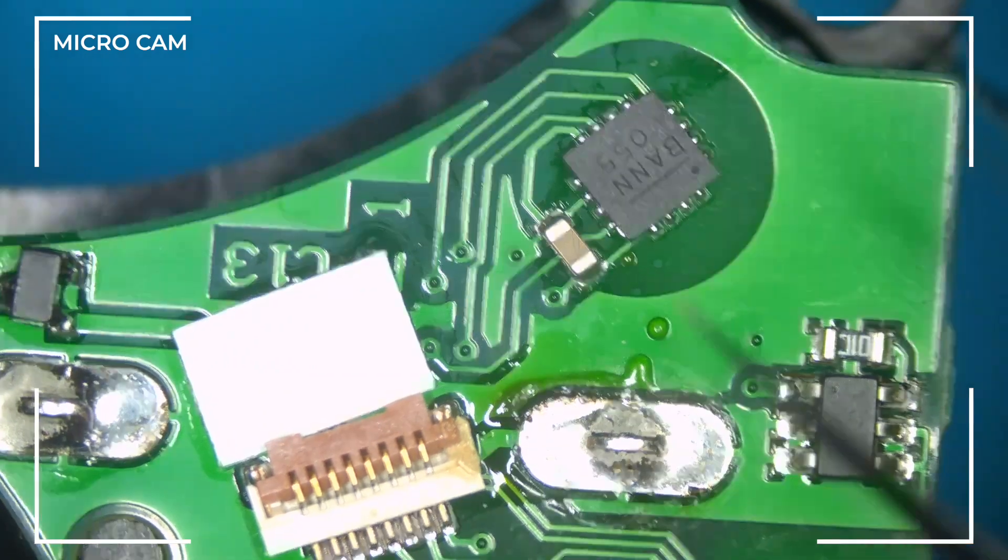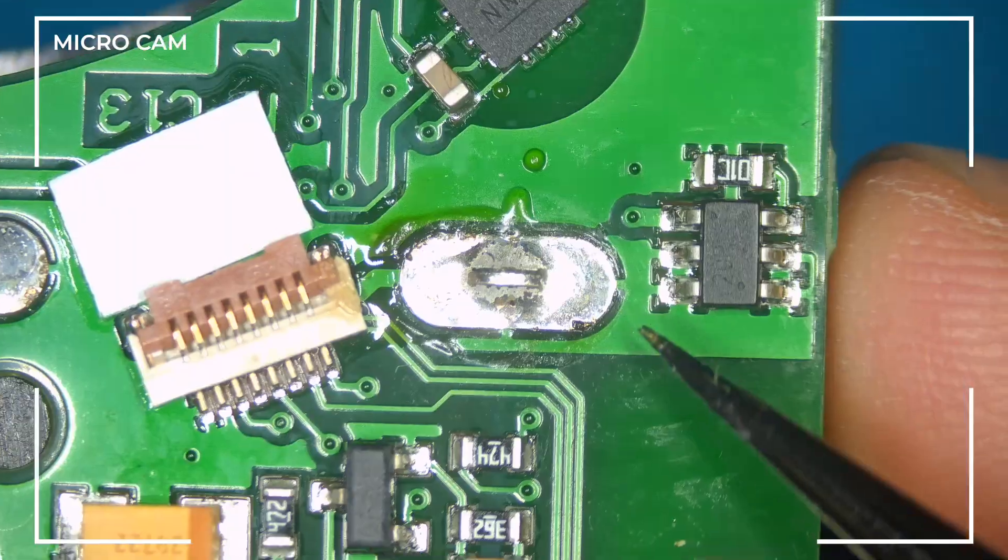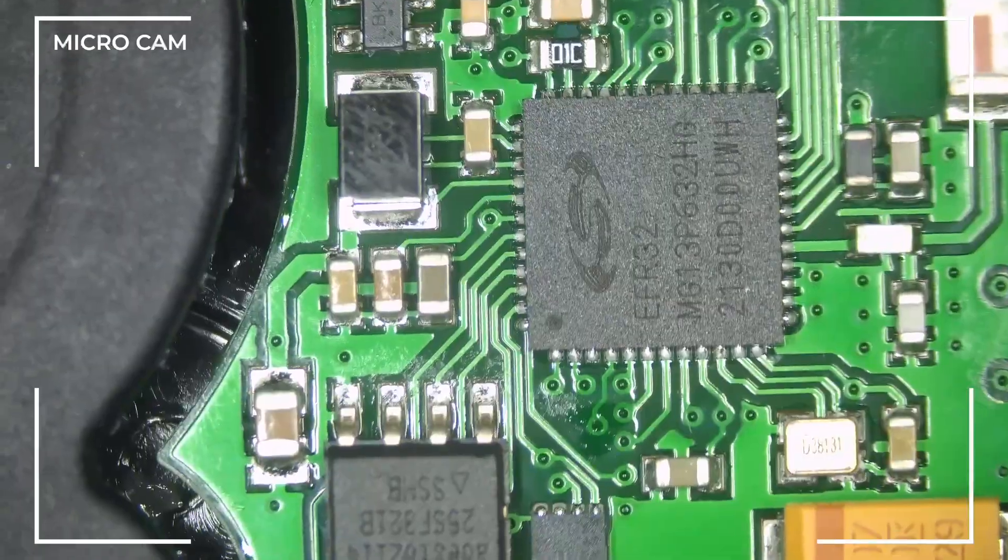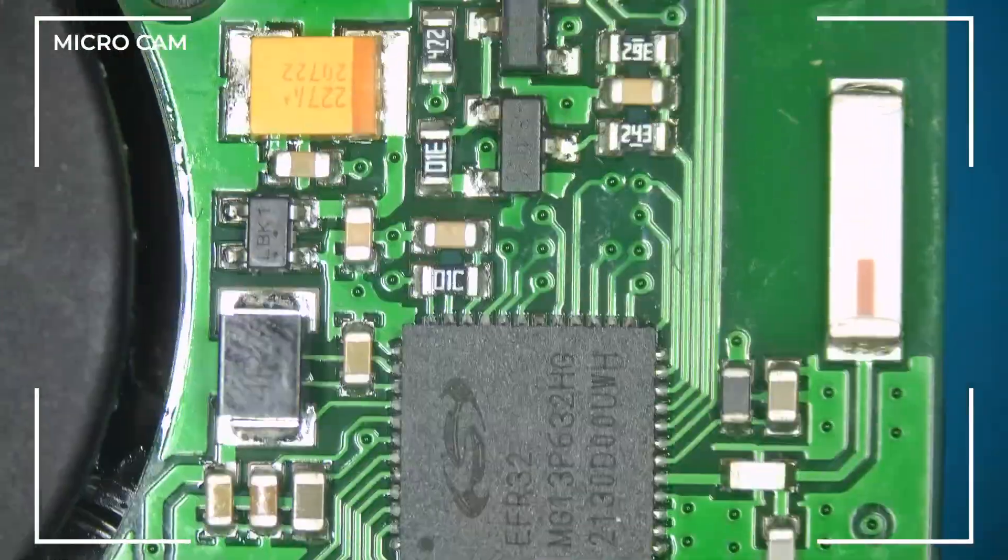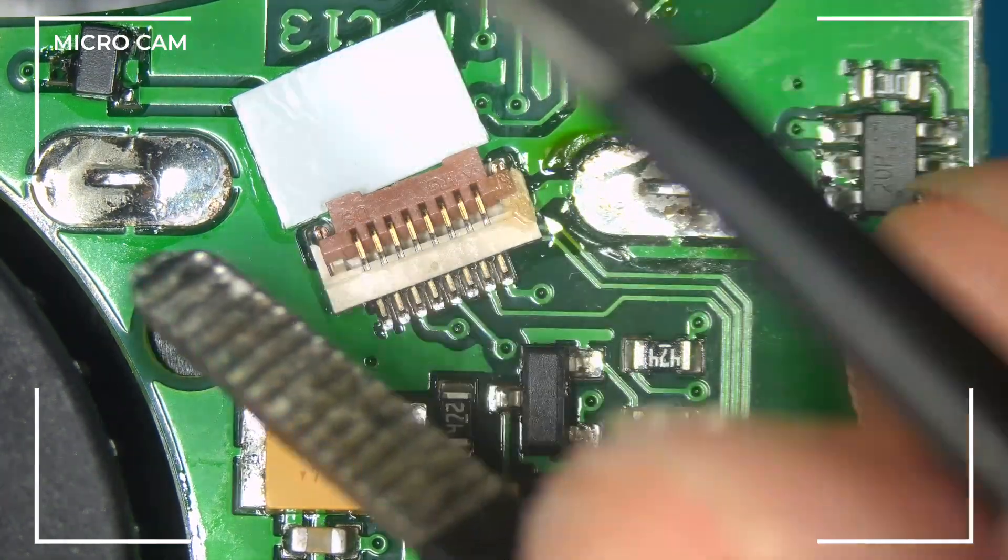Hopefully this component was the cause of no power problem, but let's quickly see if anything else might be suspicious. The rest will pass the visual inspection. The larger solder joints look good and pass the poking test.